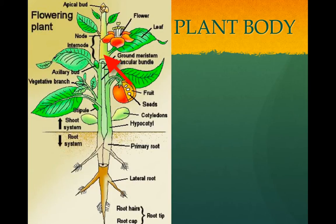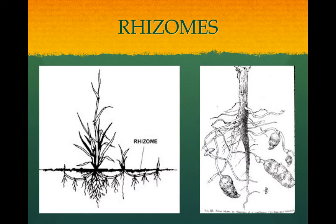Some plants grow rhizomes, which are horizontal modified stems. They can store food, and they can spread to form new plants. They can be above-ground or below-ground. Tubers are the ends of rhizomes that are enlarged, usually due to storage of starch — a potato is an example. Celery is an example of an enlarged petiole of the stem.